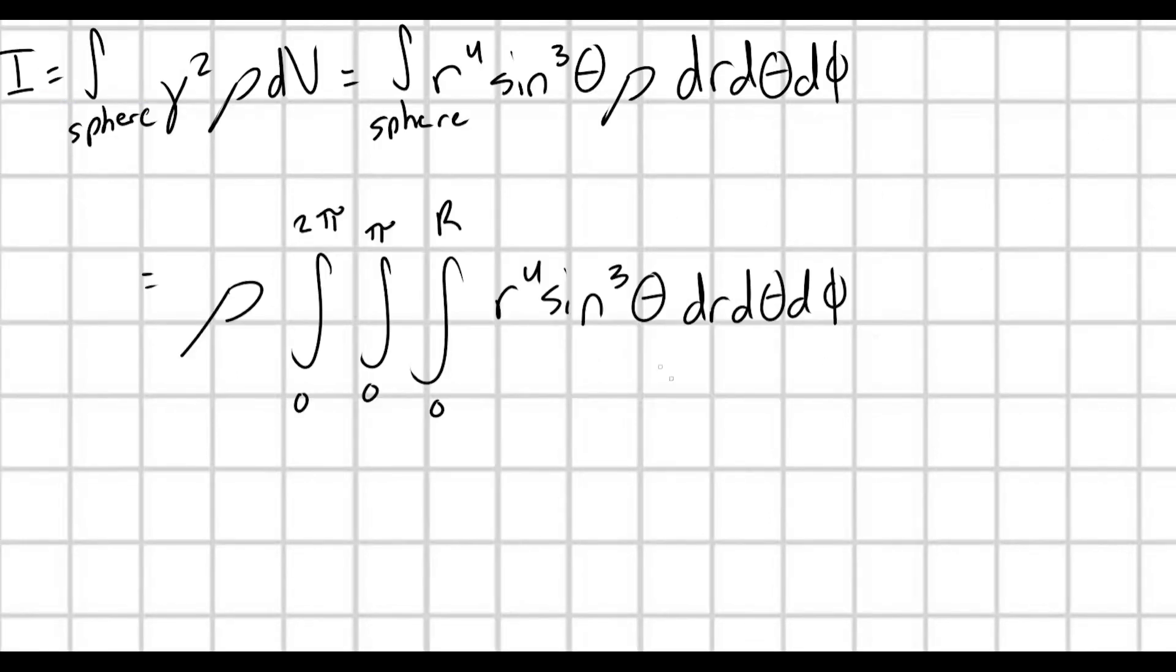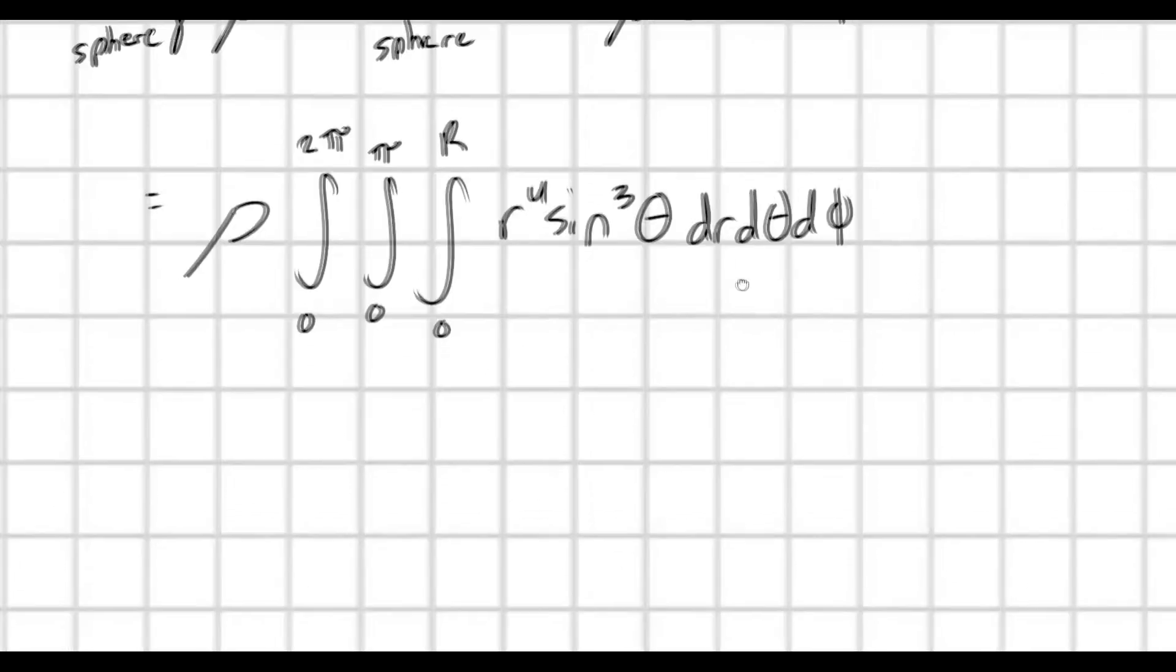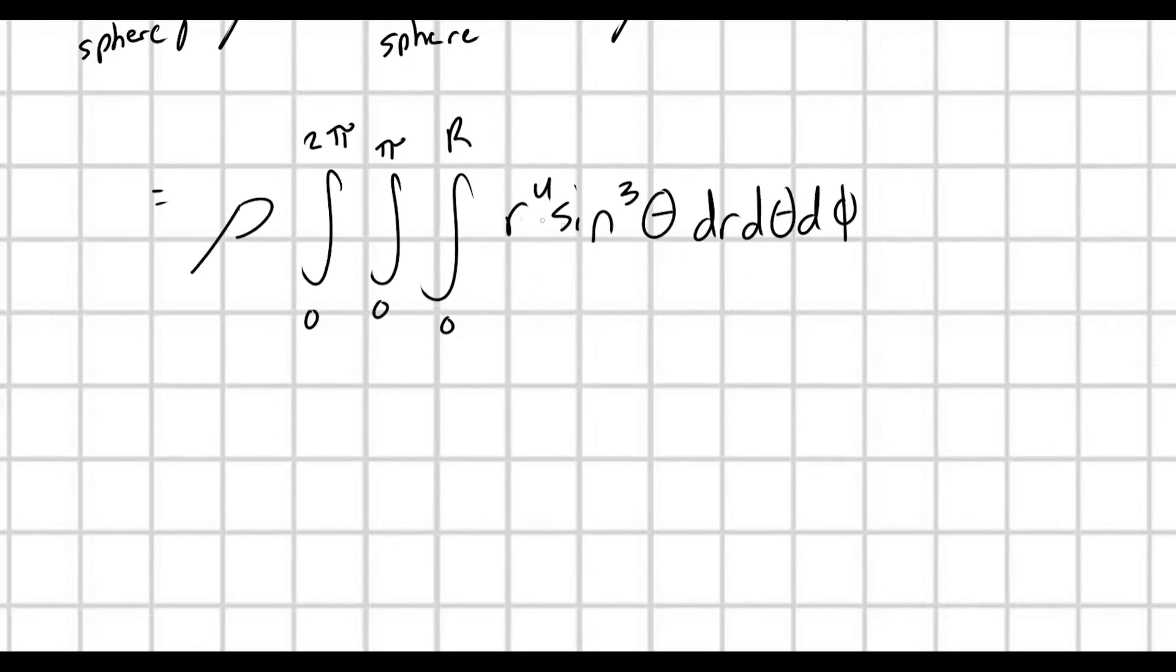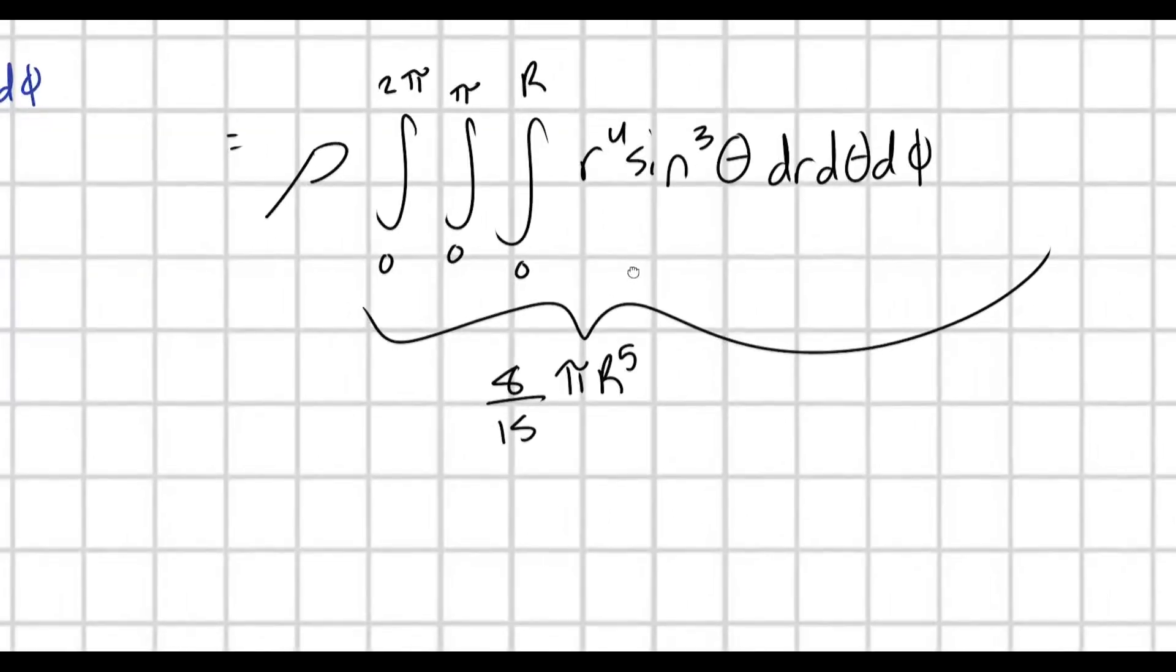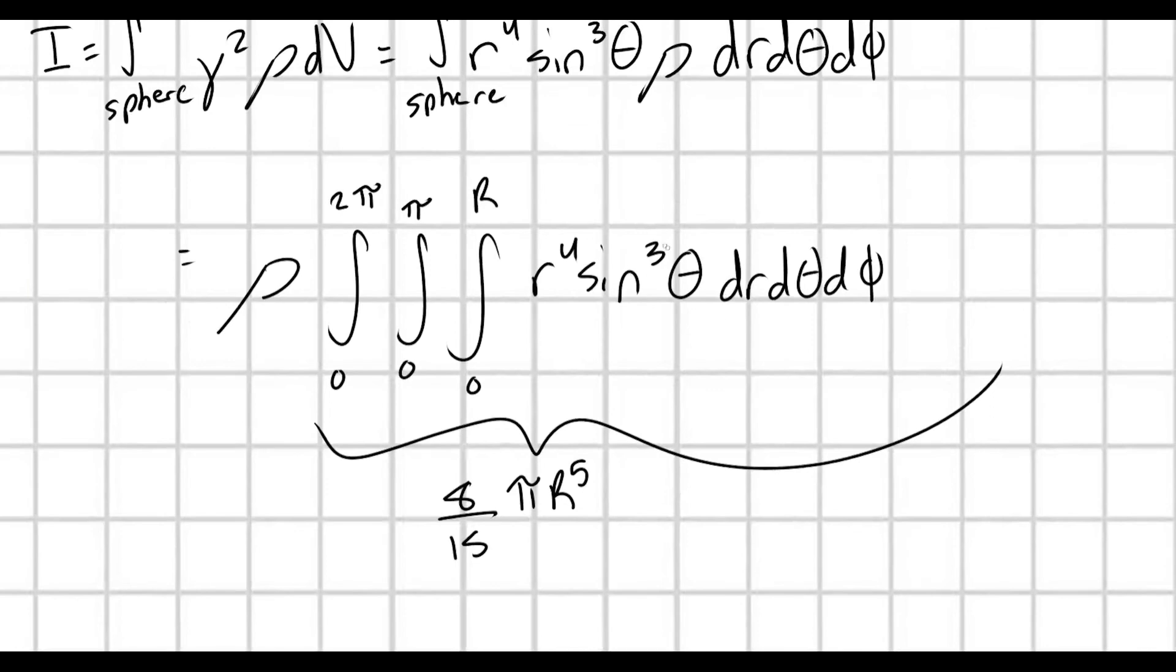All right, so all that's left to do is just to compute out this integral, and then we're basically done at that point. And I'm not going to go into all of the details, just again, for the sake of speed. But this integral, if you go out and compute it, is going to give you 8 over 15 times pi r to the fifth. And, again, the most difficult part, and it's really not that bad, the most difficult part is the integration with respect to theta.